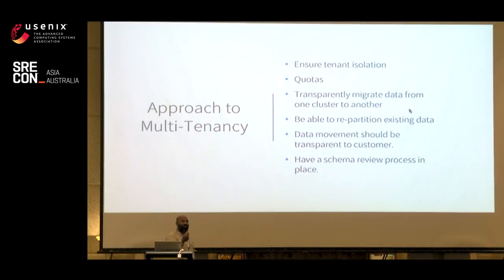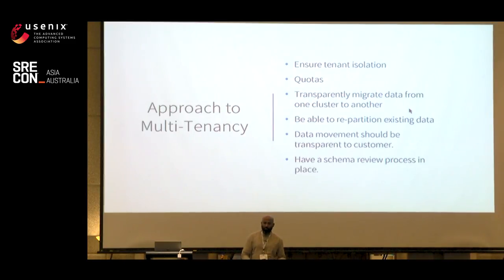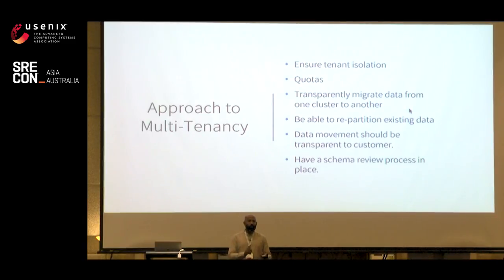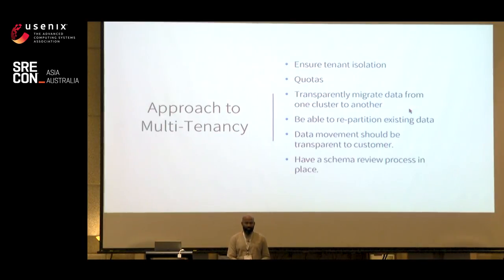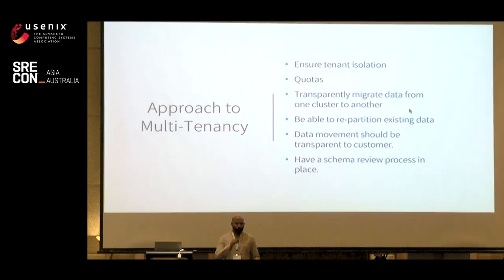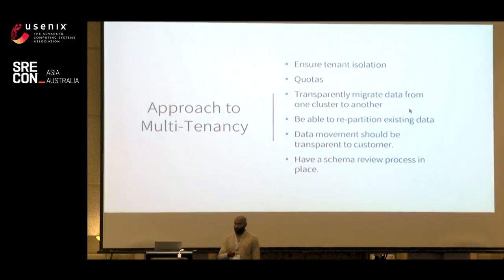On quotas: implementing quotas based on QPS created a strange problem — not all requests and not all DBs were equal. Some DBs would send only tens of requests but use 30% of cluster capacity due to their data design, while others would send thousands of requests but use very little capacity. To work around this, we implemented a cost-unit-based quota system. It looks at the amount of data either read or written for a given request and assigns a cost unit to that request. All quotas are now implemented based on cost units instead of QPS. That really helped.